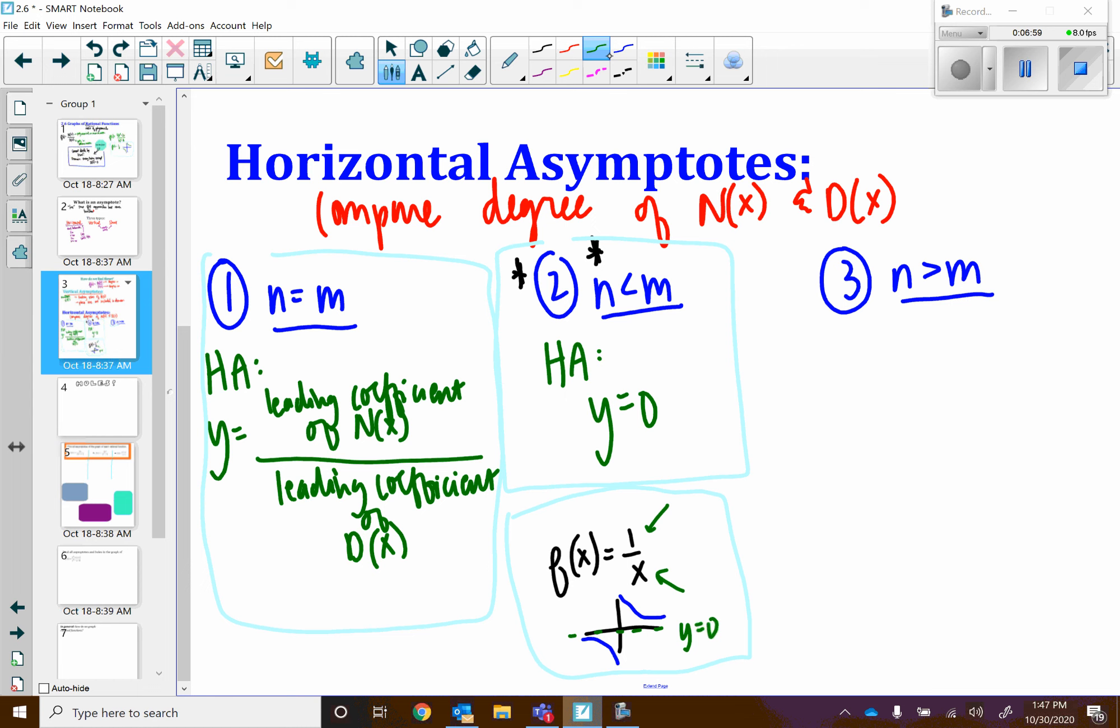Last but not least, if the numerator has a higher degree than the denominator, if n is greater than m, you will not have a horizontal asymptote. There will be no horizontal asymptote. There might be a slant, a slant asymptote.